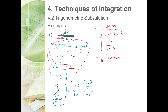Since 1 over sine theta equals cosecant theta, we have one-sixteenth times the integral of cosecant squared theta d theta. By formula, the integral of cosecant squared theta is negative cotangent theta, so the result is negative one-sixteenth cotangent theta plus C.